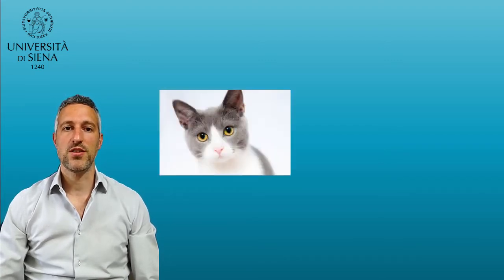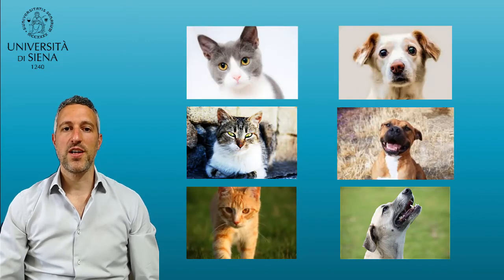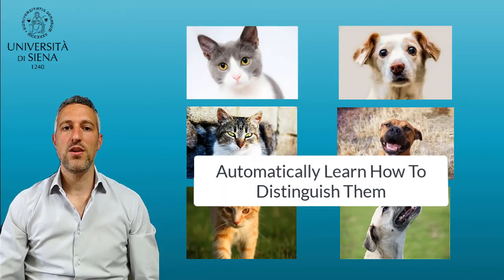Let me make an example of machine learning. Coding the rules that allow a machine to distinguish pictures of cats from the ones of dogs is not straightforward, and it does not scale well. It is easier to collect pictures of dogs and cats, provide them to the machine, and let the machine automatically learn the criterion to distinguish cats from dogs.